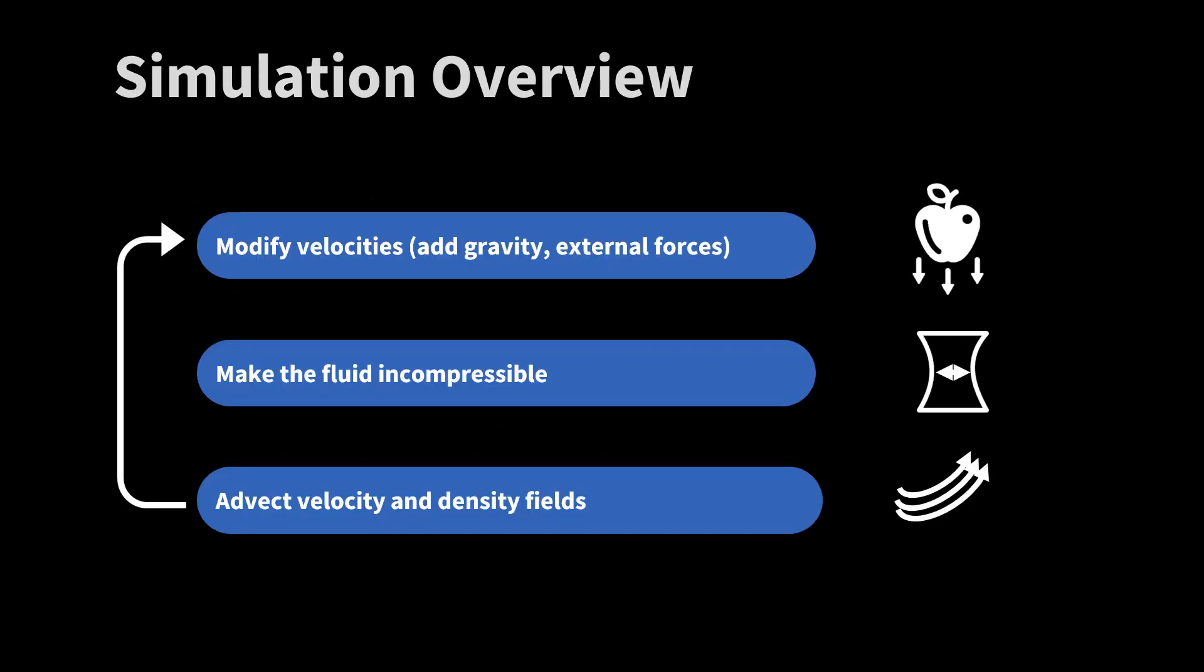Here is an overview of the Eulerian fluid simulation method. There are three steps. The first step is to modify the velocity field, for instance to add gravity or external forces. The second step is called projection. Here we make sure that the fluid is incompressible. The last step is the advection step. Here we move the velocity field as well as a smoke density field along the velocity field in the grid.